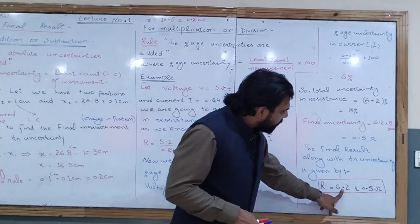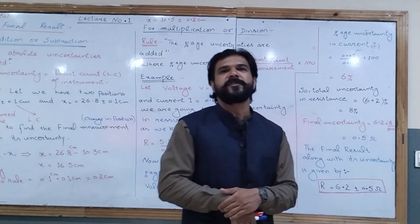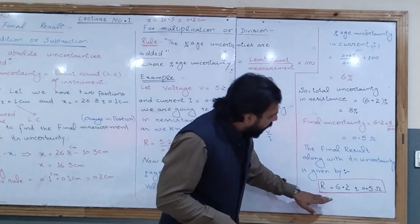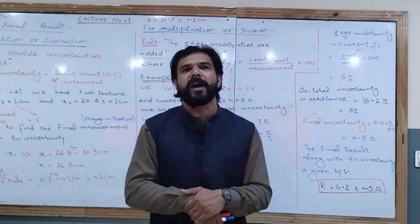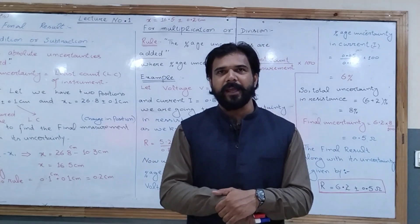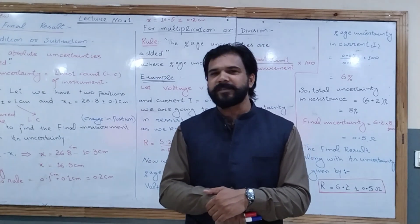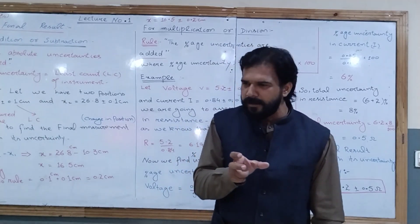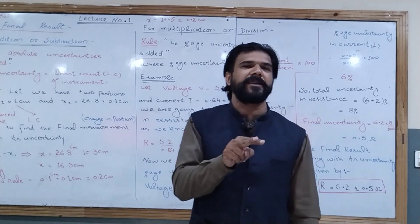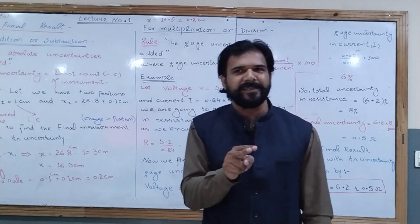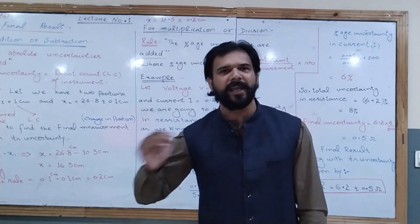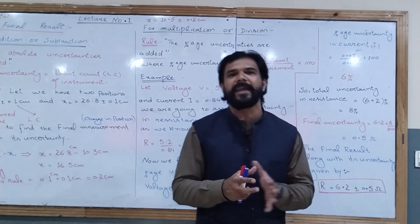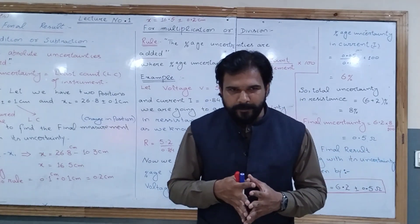The final result for resistance along with its uncertainty is R = 6.2 ± 0.5 Ω. In today's lecture, we discussed how to assess the uncertainty in the final result using two rules: one for addition and subtraction (add absolute uncertainties), and one for multiplication and division (add percentage uncertainties).